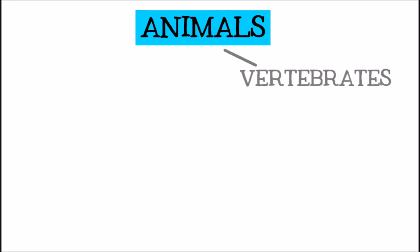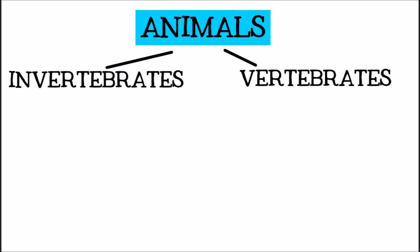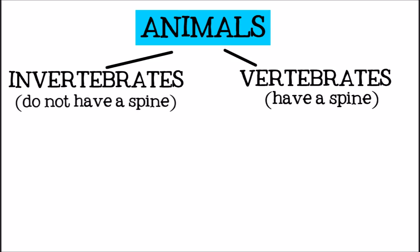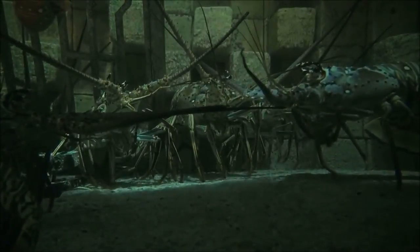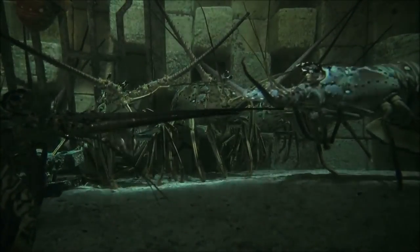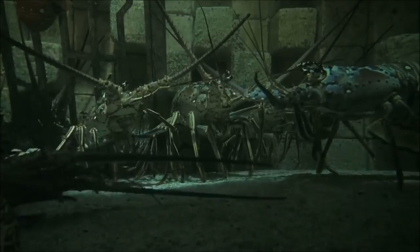The two largest groups of animals are vertebrates and invertebrates. Vertebrates are animals that have spines, or backbones. Invertebrates are animals that do not have backbones. Most of the animals in the world are invertebrates.